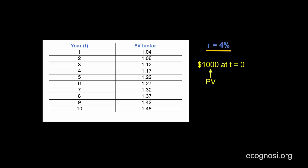In other words, I want to calculate the future value in year 7. So I will go over here at 7, get the future value factor which is 1.32 and multiply that number by my initial 1000.